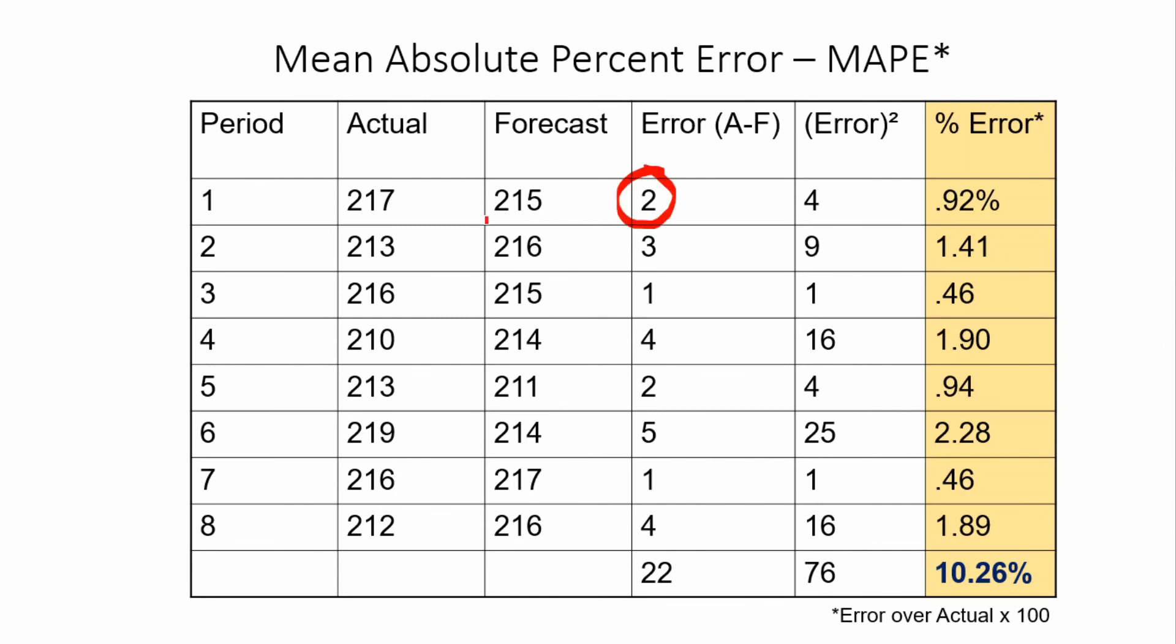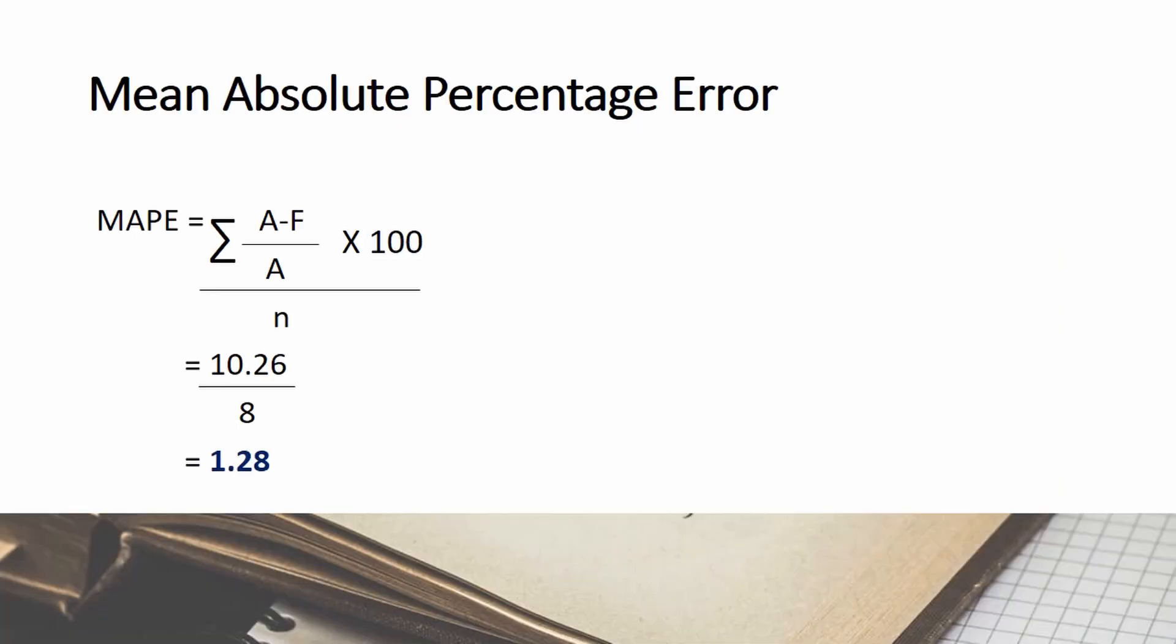In the table above, 2 divided by 217, then multiplied by 100, is 0.92 or 0.92%. We get the summation, which is 10.26, divided by n or 8, giving us a mean absolute percentage error of 1.28. That is the average percentage of our error.